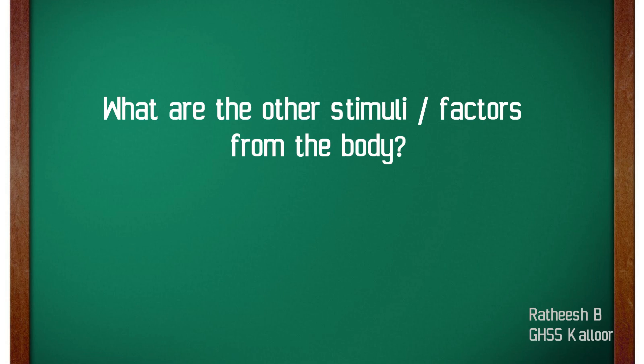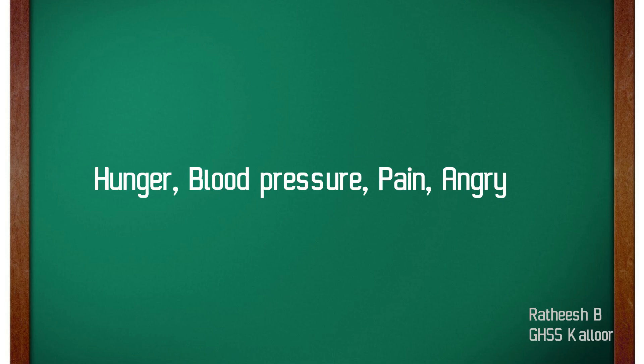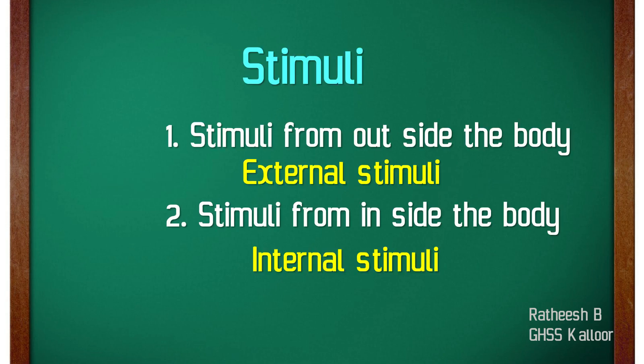What are the other stimuli or factors from inside the body? Like thirst, hunger, blood pressure, pain, and the feel of urination are stimuli from inside the body. So we can classify stimuli into two types: stimuli from outside the body, which are called external stimuli, and stimuli from inside the body, which are called internal stimuli.